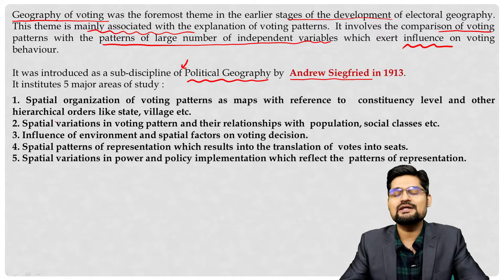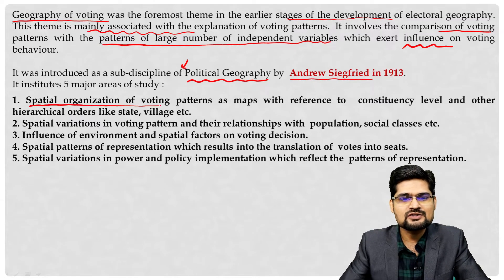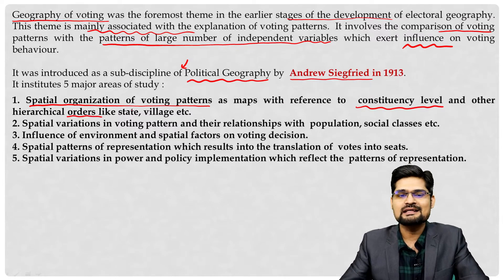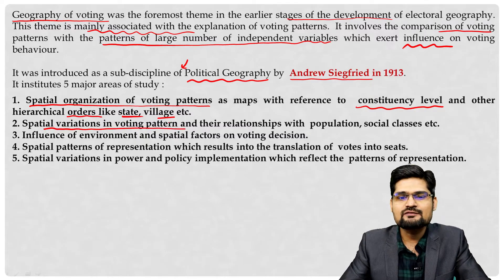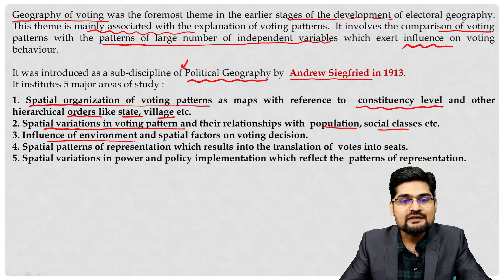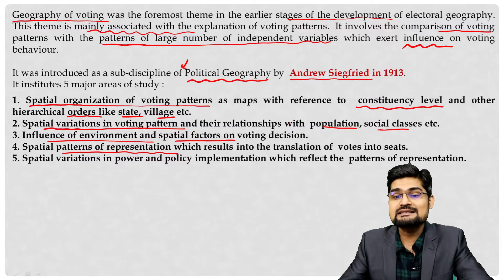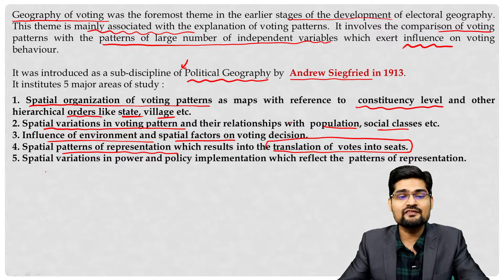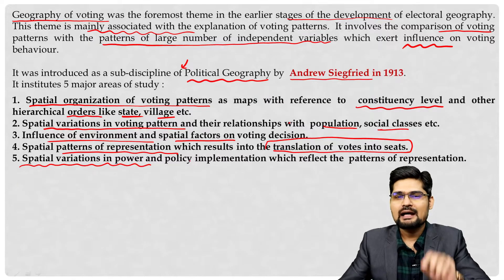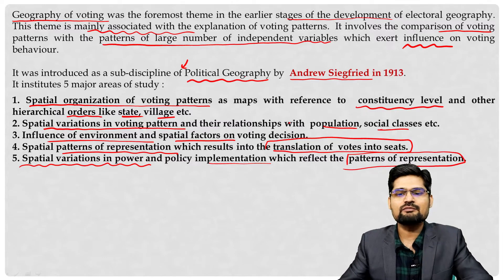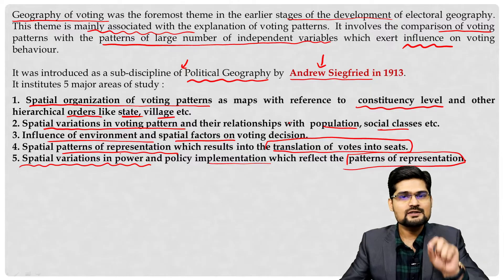It has five major areas of study. First, spatial organization of voting patterns as maps with reference to constituency level and other hierarchical orders like state and village. Second, spatial variations in voting pattern and their relationships with population, social classes, etc. Third, influence of environment and spatial factors on voting. Fourth, spatial patterns of representation which result in the translation of voting into seats. Fifth, spatial variations in power and policy implementation reflecting the patterns of these representations.